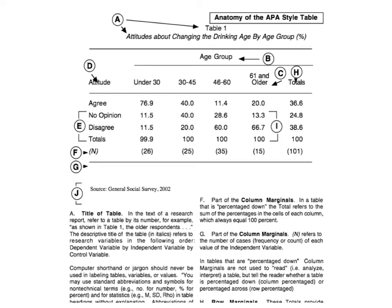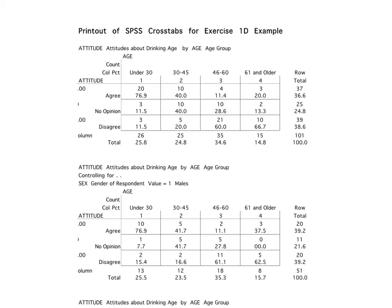In your textbook, you have this document and it shows you all the different parts of your APA style table. Now, typically when you run SPSS and you have your crosstab output, that is the information — those are the numbers that you are going to insert into your APA style table.